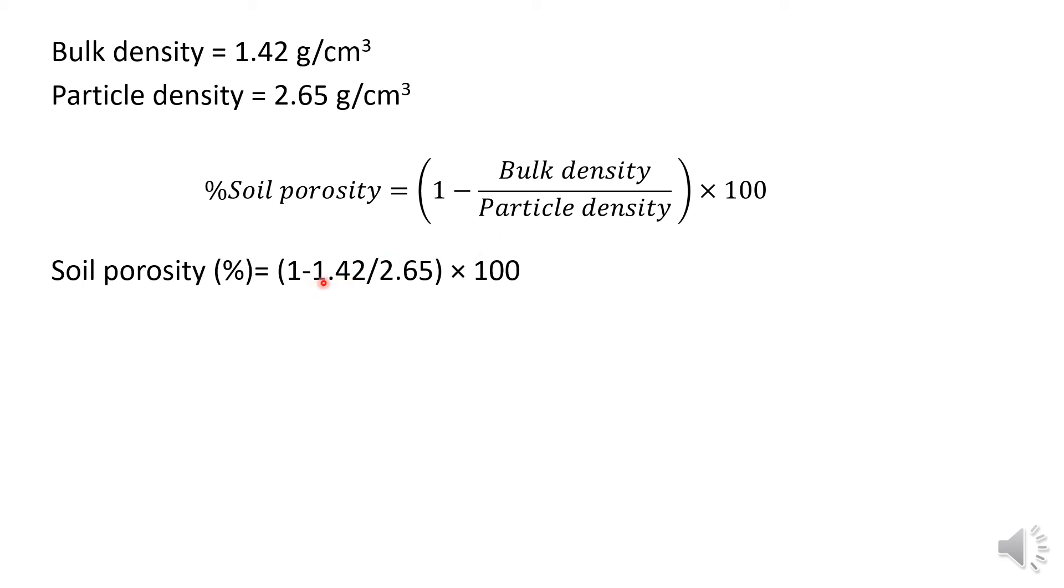We will divide 1.42 grams per centimeter cubed by 2.65 grams per centimeter cubed. We will find 0.536, and we will subtract this value from 1.